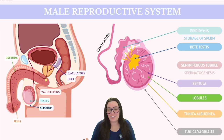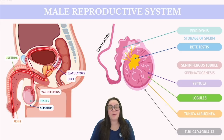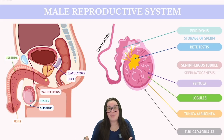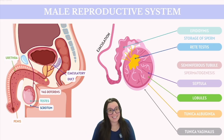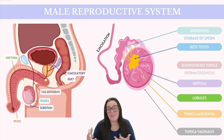When ejaculation occurs, sperm cells travel up the vas deferens and into the ejaculatory duct. Eventually, it enters the urethra, which is the final channel for urine in the urinary system. This route enables sperm to exit the body through the penis, which is a copulatory organ designed to deliver sperm into the female reproductive tract. Along with the scrotum, the penis forms the external genitalia of the male.